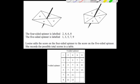So here's a typical exam question. We've got a spinner with 4 sections and here we've got a spinner with 5 sections. The 4 sided spinner is labelled 2, 4, 6 and 8. And the 5 sided spinner is labelled 1, 3, 5, 7 and 9. Louise adds the scores together and she records them in a table.